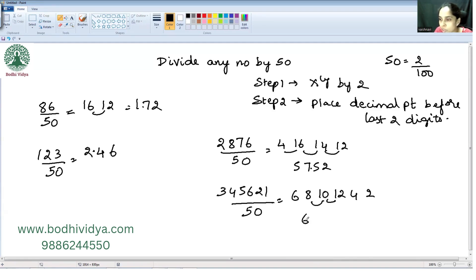So our answer is 6, 9, 1, 2, 4, 2. You are placing a decimal point before the last 2 digits. That is here. So our answer is 69,120.42.